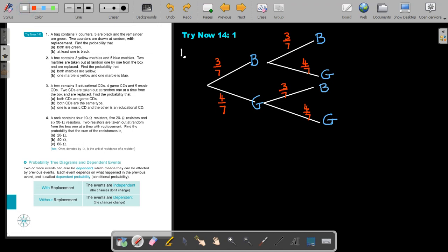So find the probability, number A, that both are green. So the probability both green, that is going to be, let's just find that branch. So both are green, it's going to be green, green. Can you see that? So basically it's going to be four out of seven multiply four out of seven, and that's going to be sixteen over forty-nine.